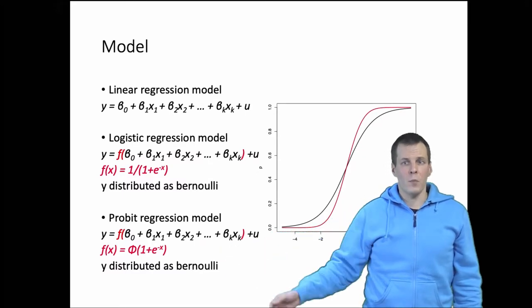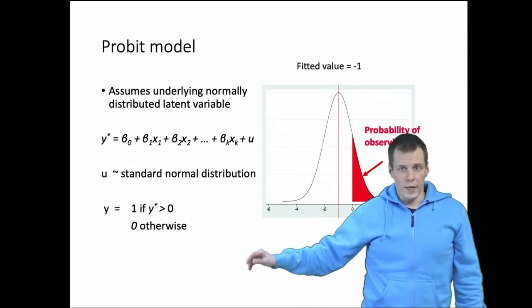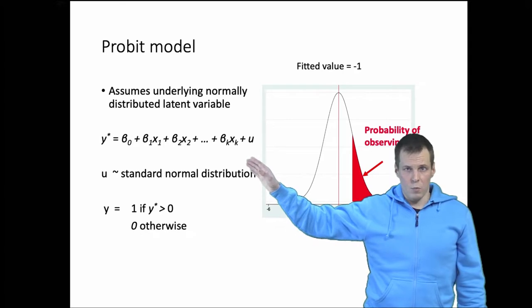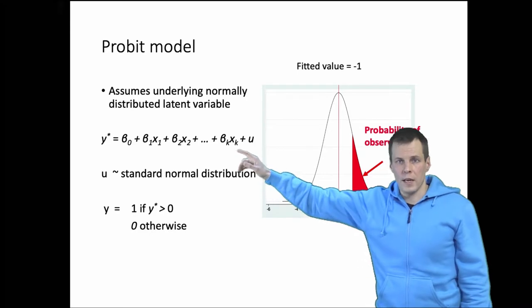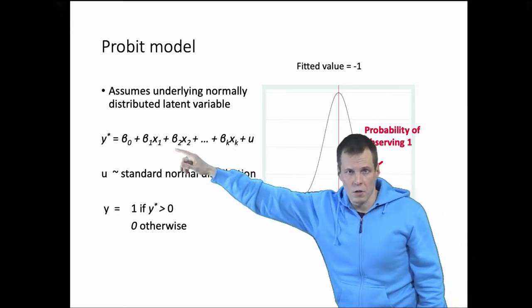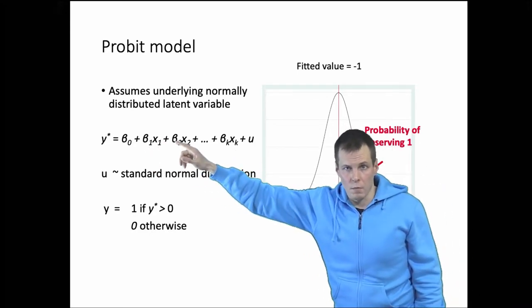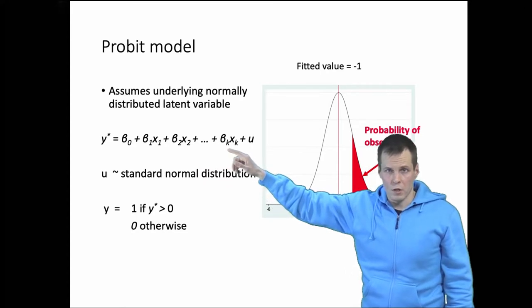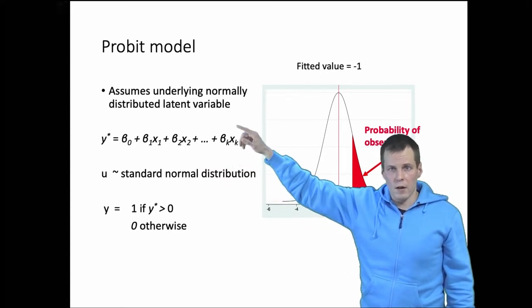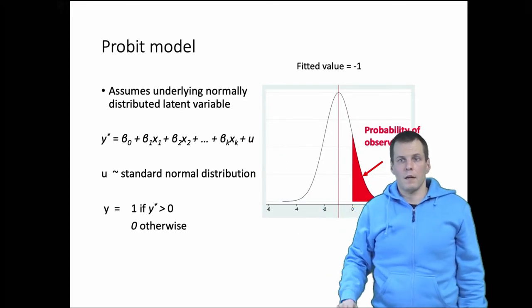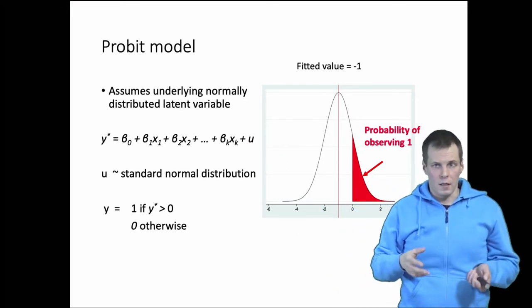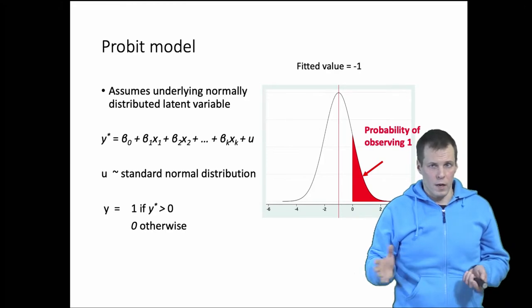The idea of a probit model is that we have for each observation a latent variable. So we have a latent variable that contains the linear prediction, this is the part that we normally transform with a link function, plus an error term that has variance of 1 and mean of 0. And that latent variable y star determines the value of the actual observed y.